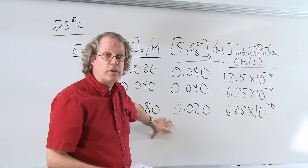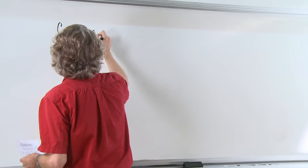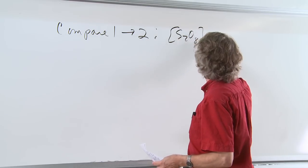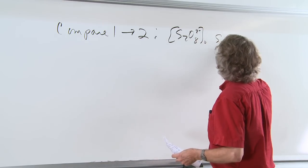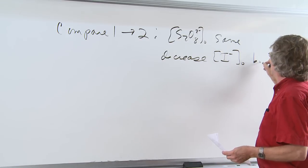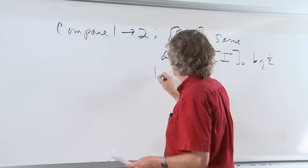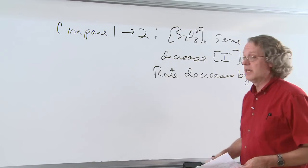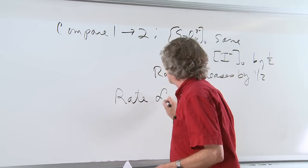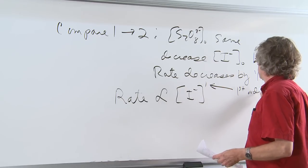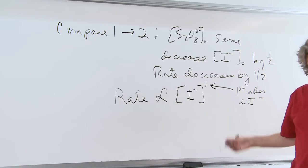Now let's compare these results to sort out the order and the rate constant. Comparing experiment one to experiment two: we held the peroxydisulfate concentration the same and decreased the concentration of iodide by one half, and we found that the rate decreased by one half. This tells us that the rate is proportional to the concentration of iodide to the first power — the reaction is first order in iodide concentration.